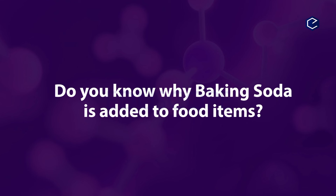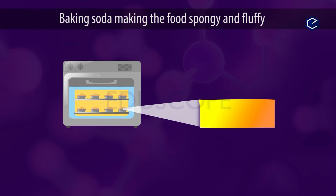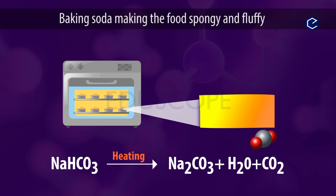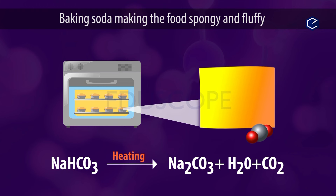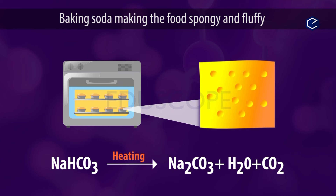When baking soda is added to food and cooked, Sodium Hydrogen Carbonate decomposes to Sodium Carbonate, water, and carbon dioxide. This released carbon dioxide gas gets trapped in small pockets in the food, making it spongy and fluffy. That is why bread and cake are fluffy and spongy.